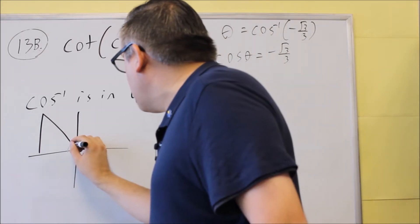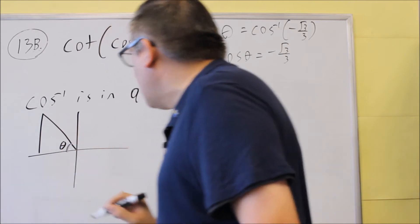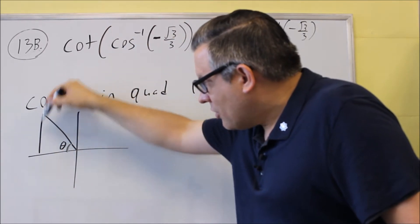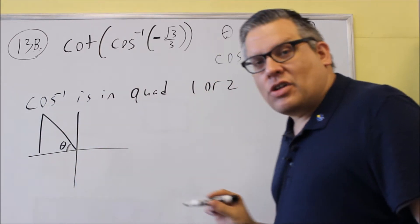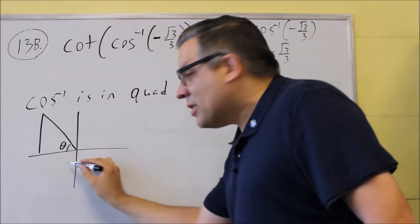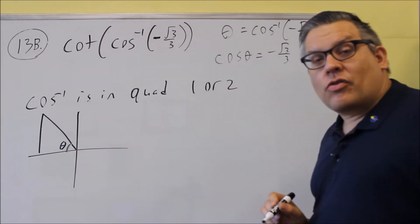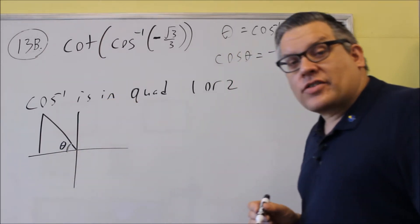This is theta here. Hypotenuse is this one. The opposite would be this side. So, this is your adjacent here. Now, that's the one that has to be negative because that's a negative x value when you go to the left of the vertical axis there.